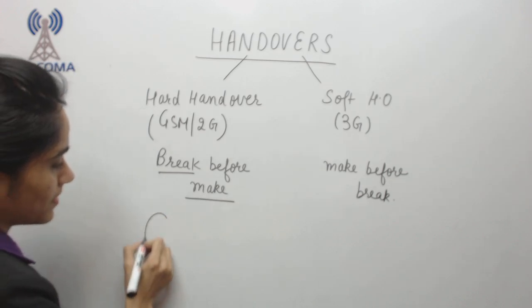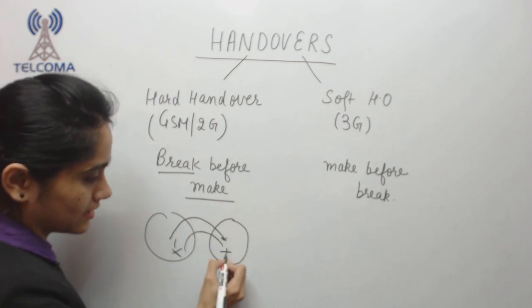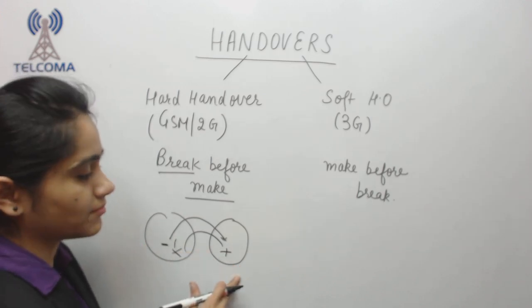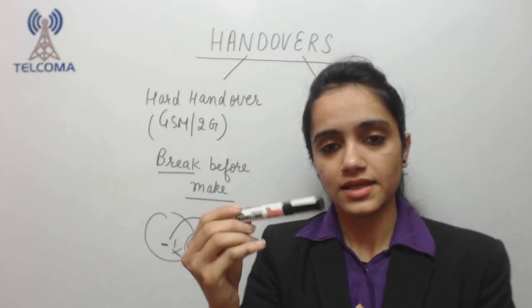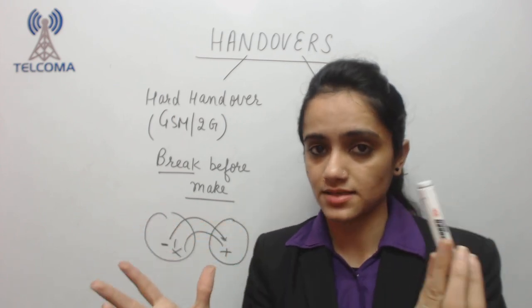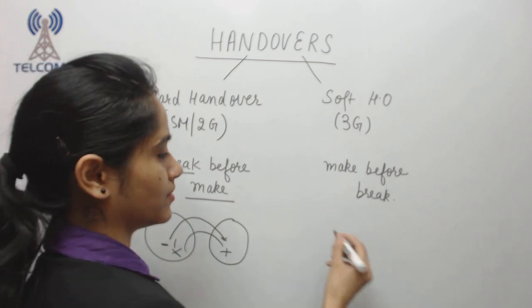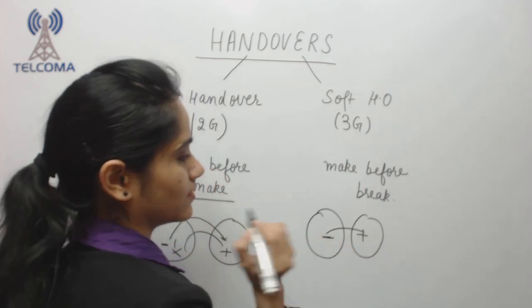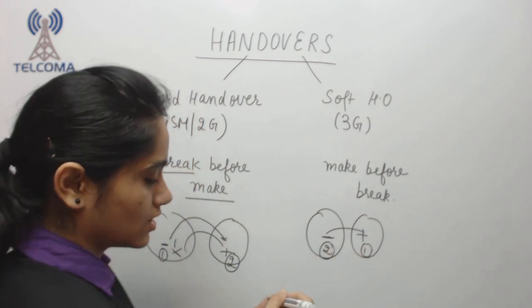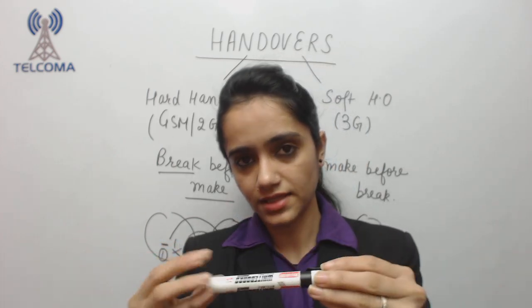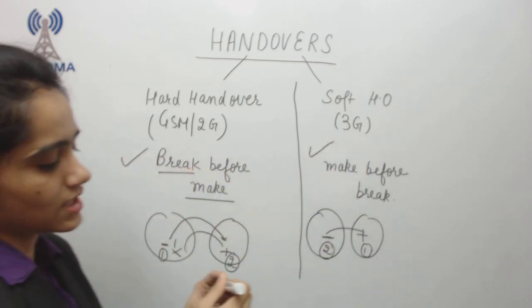In break-before-make, when passing from one cell to another, you must break the connection first and then make a new connection. So you first release from the home cell, then connect to the foreign network. This is the hard handover concept used in 2G. In soft handover — make-before-break — the UE makes the new connection first, and then releases the old one. So first it makes the connection to the new cell, then it breaks from the old cell. This make-before-break concept is used in 3G.